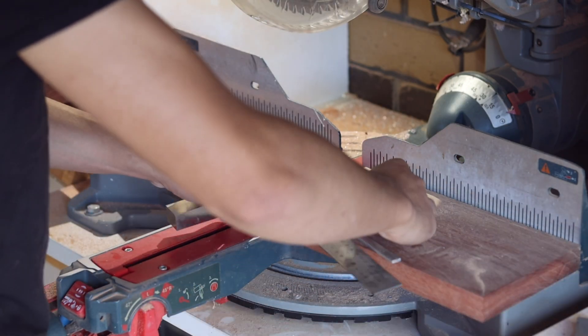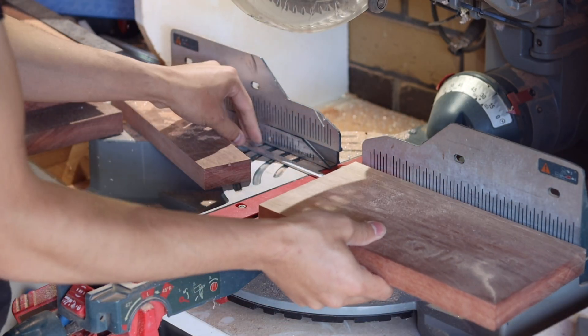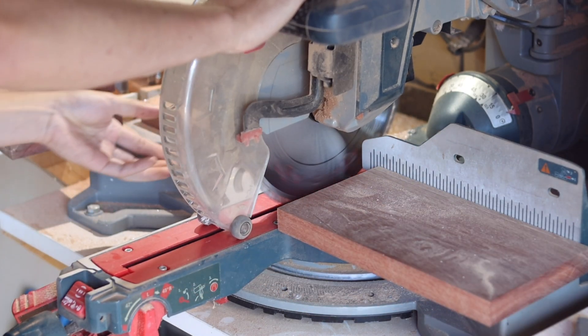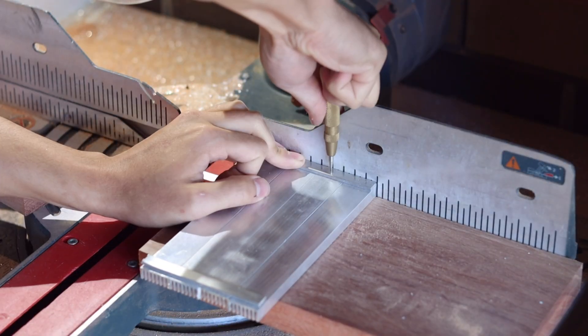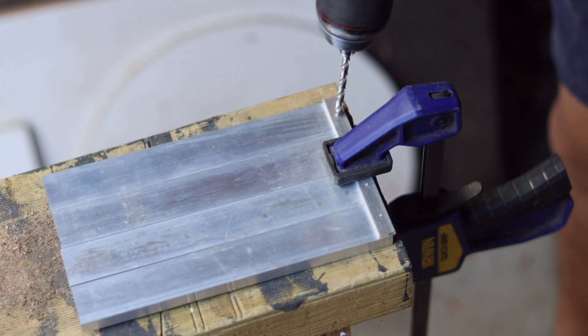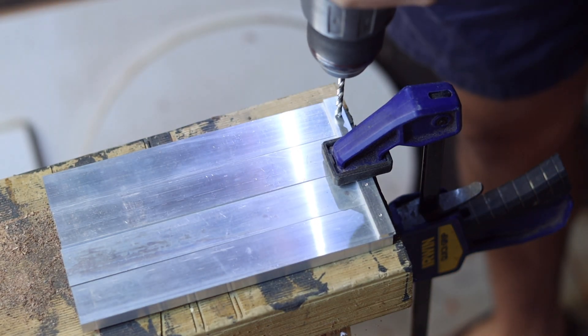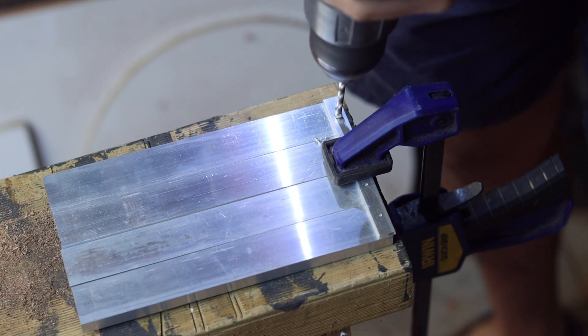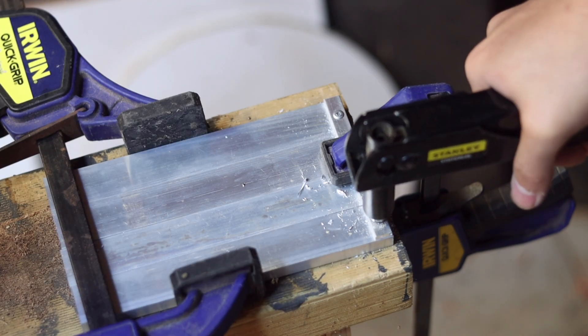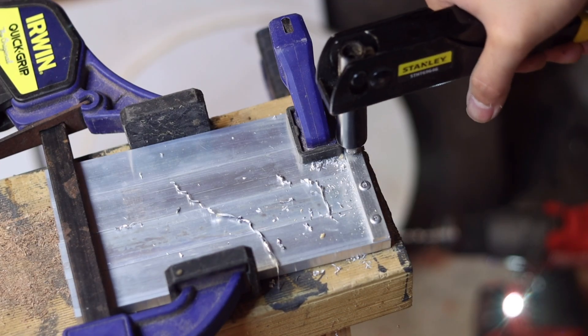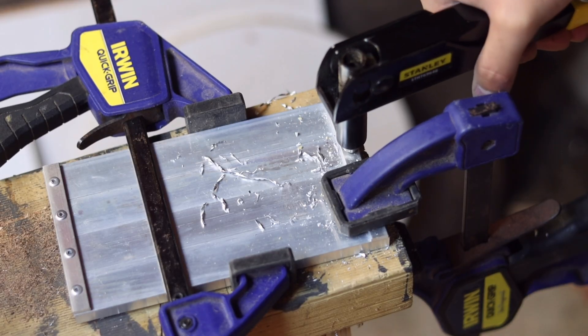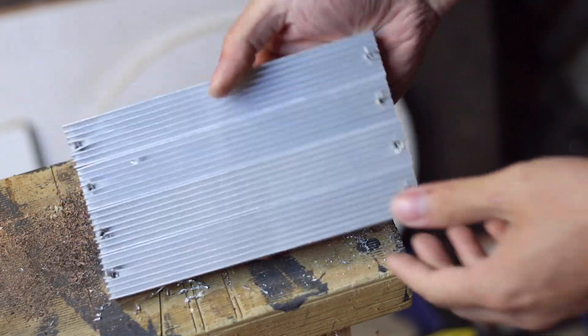The aluminum bars are cut to size and then fastened together with two aluminum flat bars. This will now serve as a large rectangular heat sink.